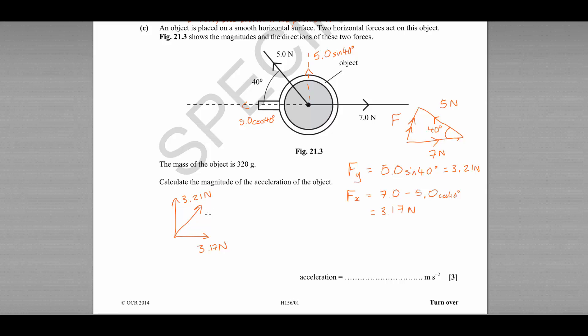We now need to find the resultant of those two components to work out what the actual force F is. So we can do that with Pythagoras: F is equal to the square root of 3.17 squared plus 3.21 squared, which comes out as 4.51 newtons.